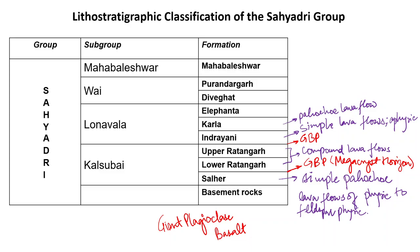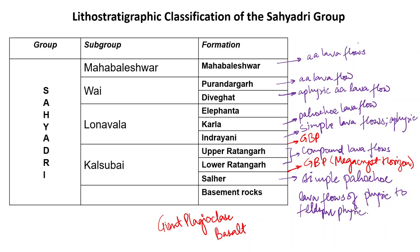The Deveghat formation consists of aphyric AA lava flows. Elephanta has similar features. The Purandhargad formation consists mainly of AA lava flows and simple flows, with compound flows in the upper part. The Mahabaleshwar formation is separated from the lower unit by a GBP horizon and also consists of AA lava flows and simple feldspar-phyric flows. Purandhargad and Mahabaleshwar are separated by the Giant Plagioclase Basalt.